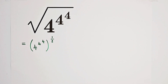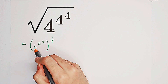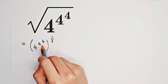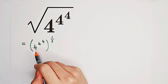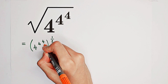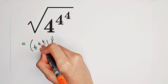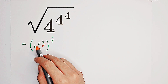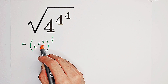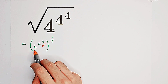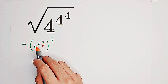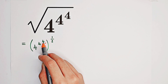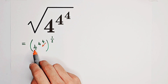Now, be careful. How do we calculate 4 to the power of 4 to the power of 4 — from the top or from the bottom? Of course, from the top. Firstly, you calculate 4 to the power of 4, and this is the exponent of our base 4. So you should calculate 4 to the power of 4 first, then apply it as the new exponent of the base 4.